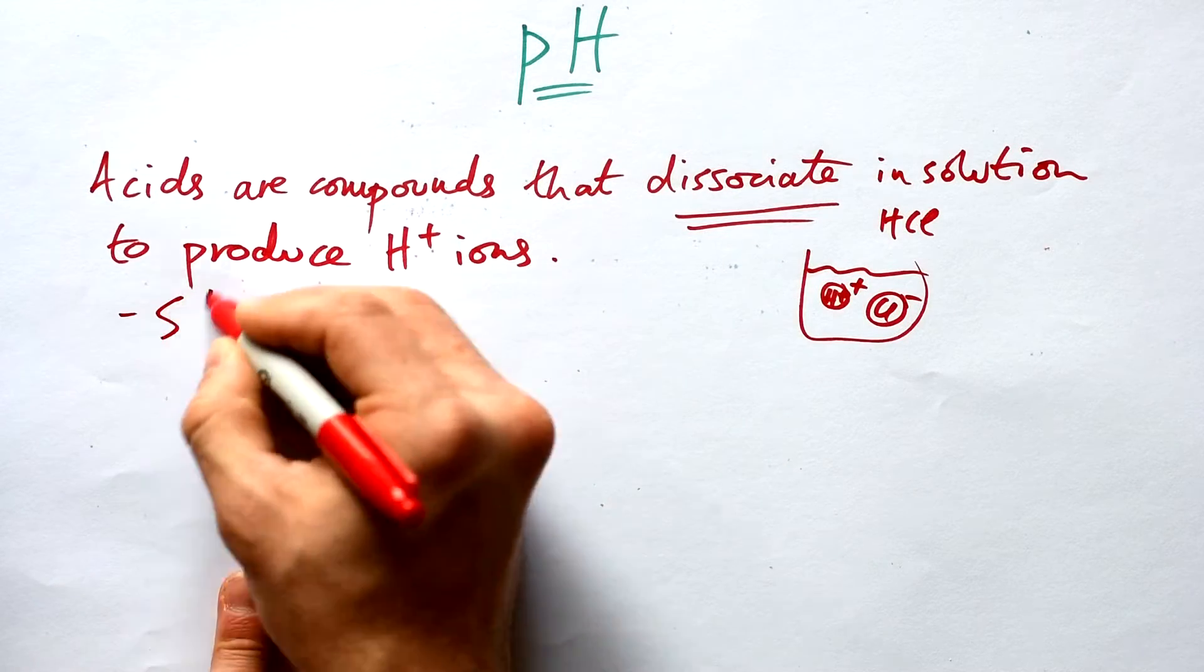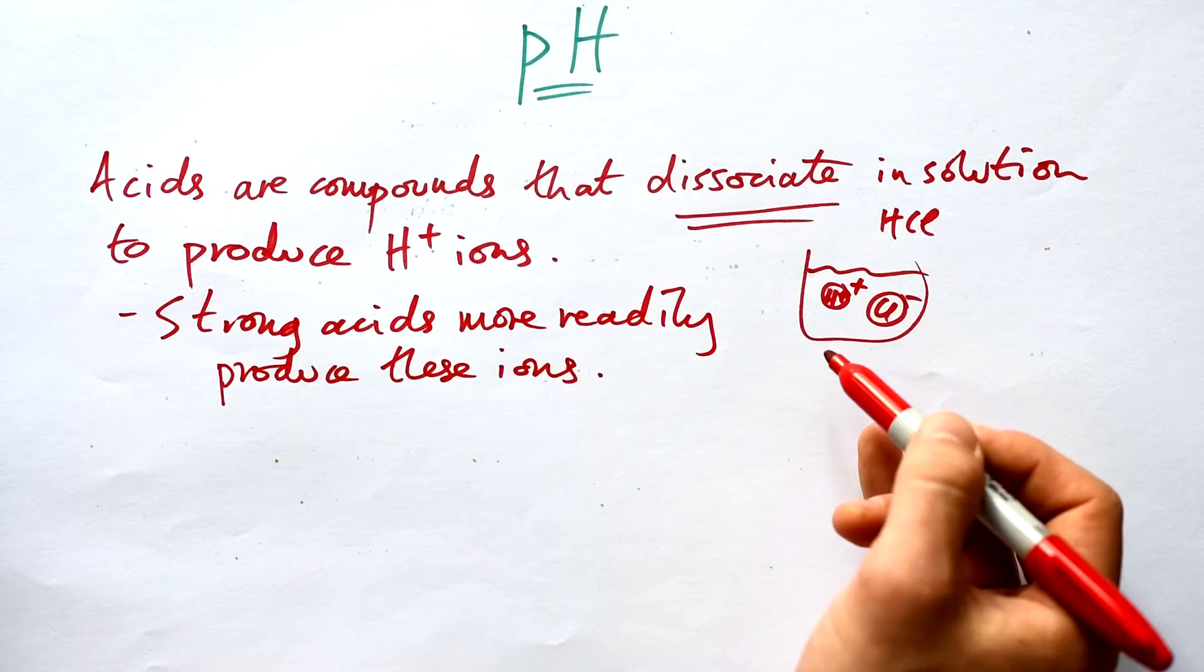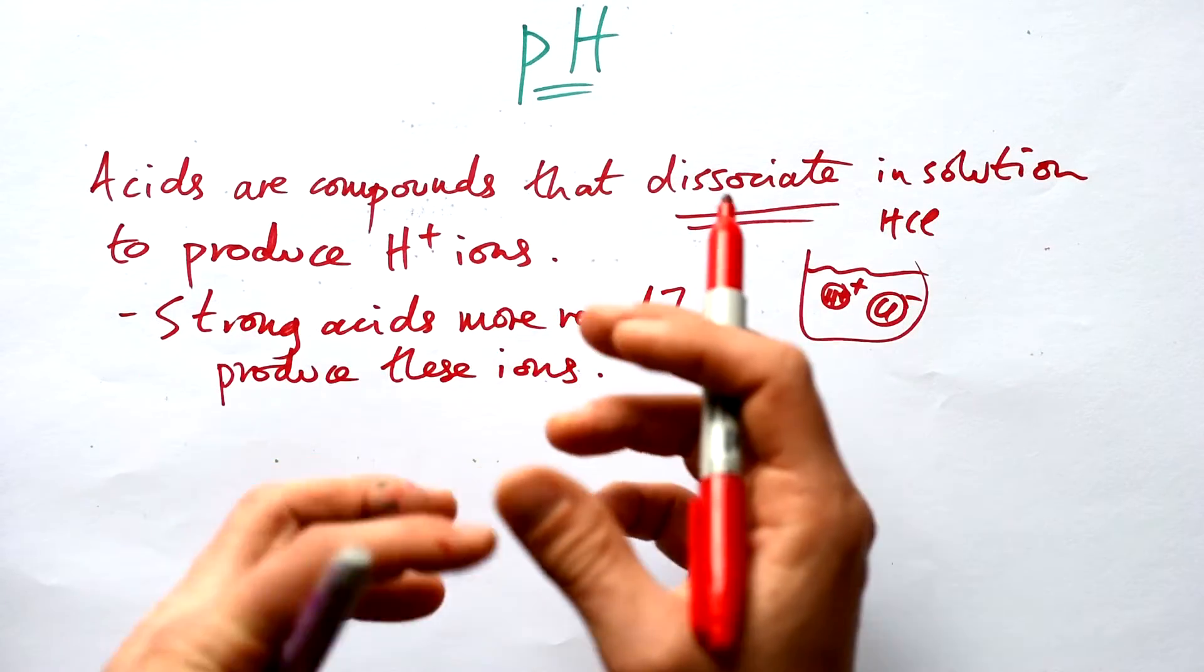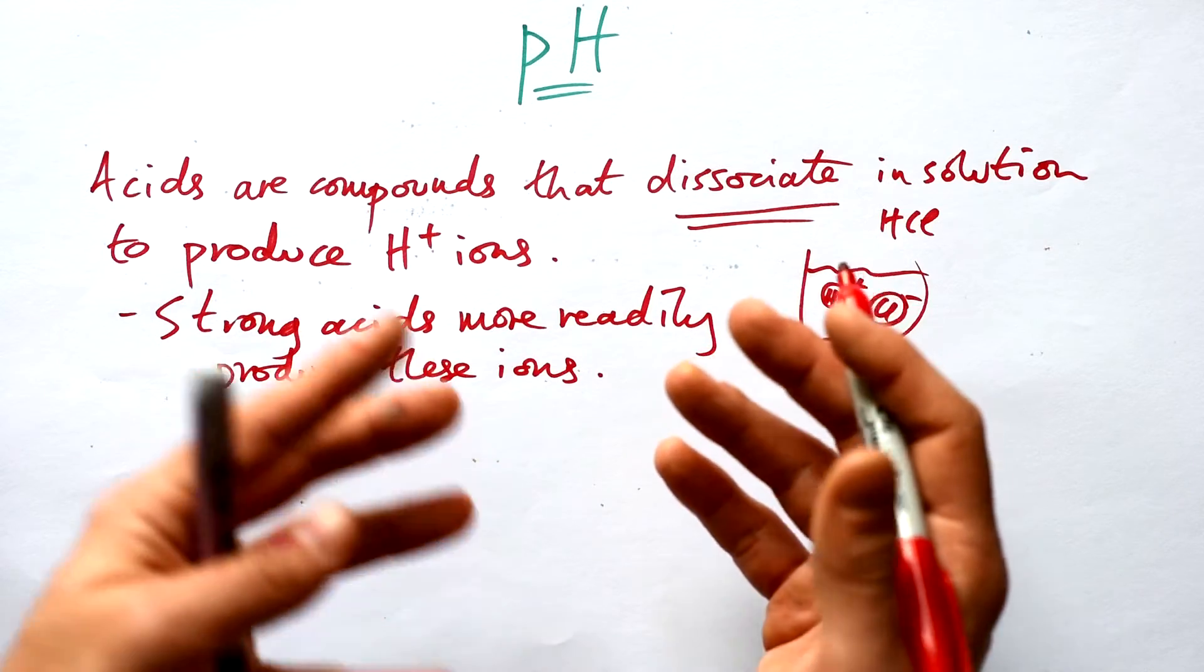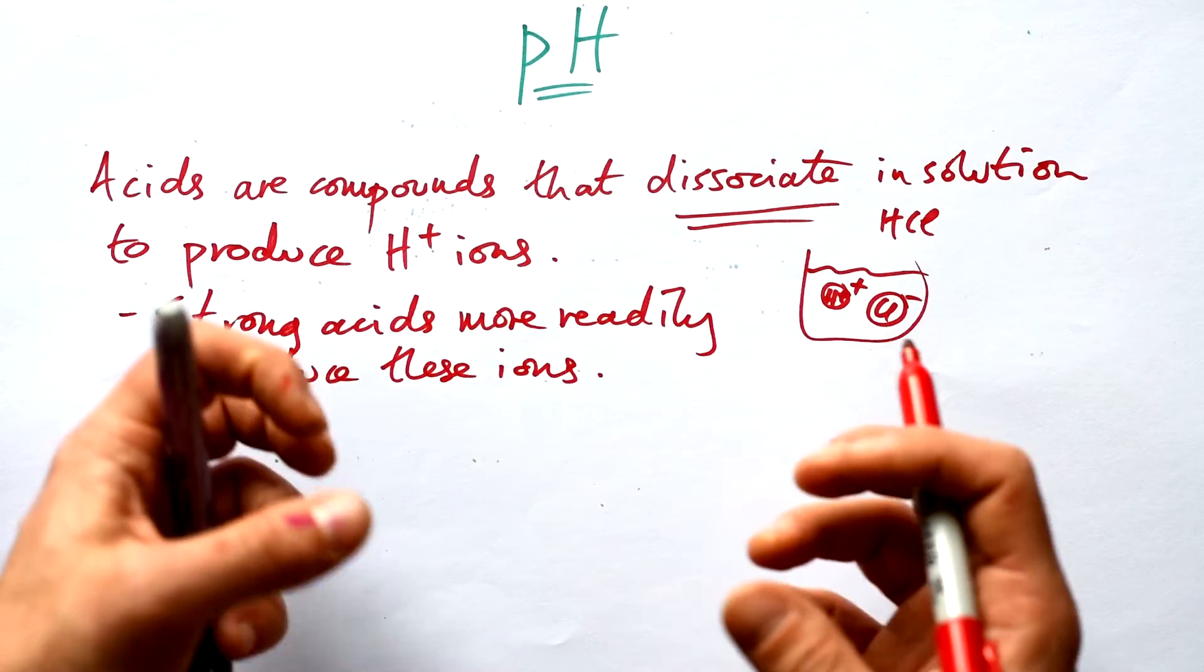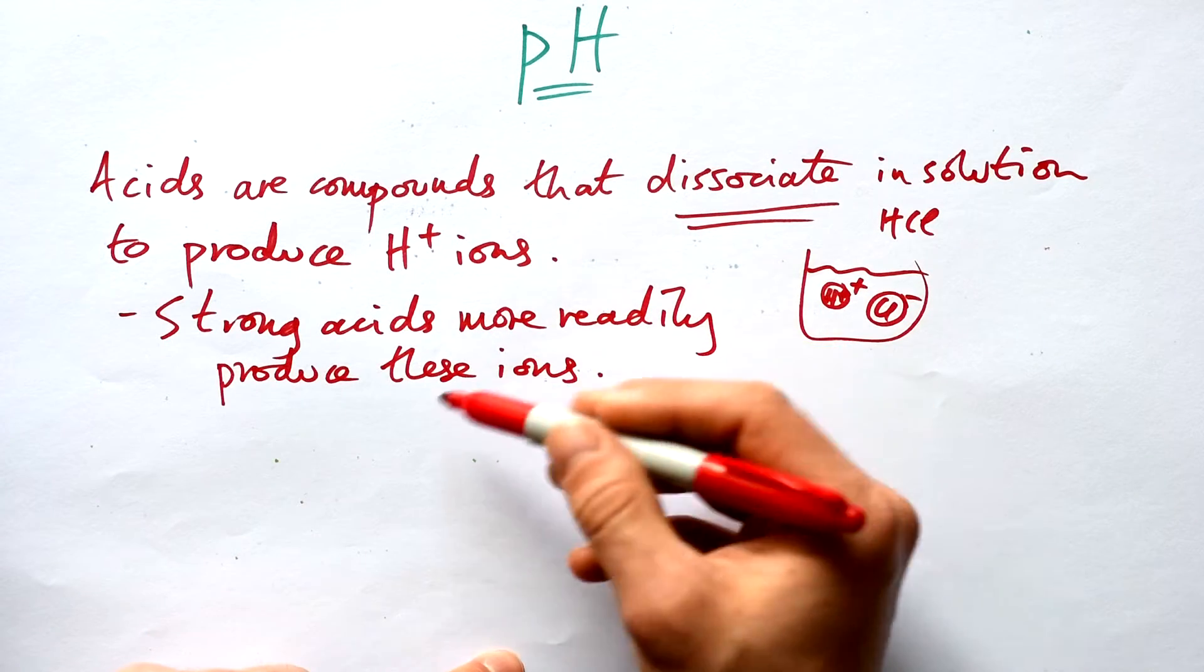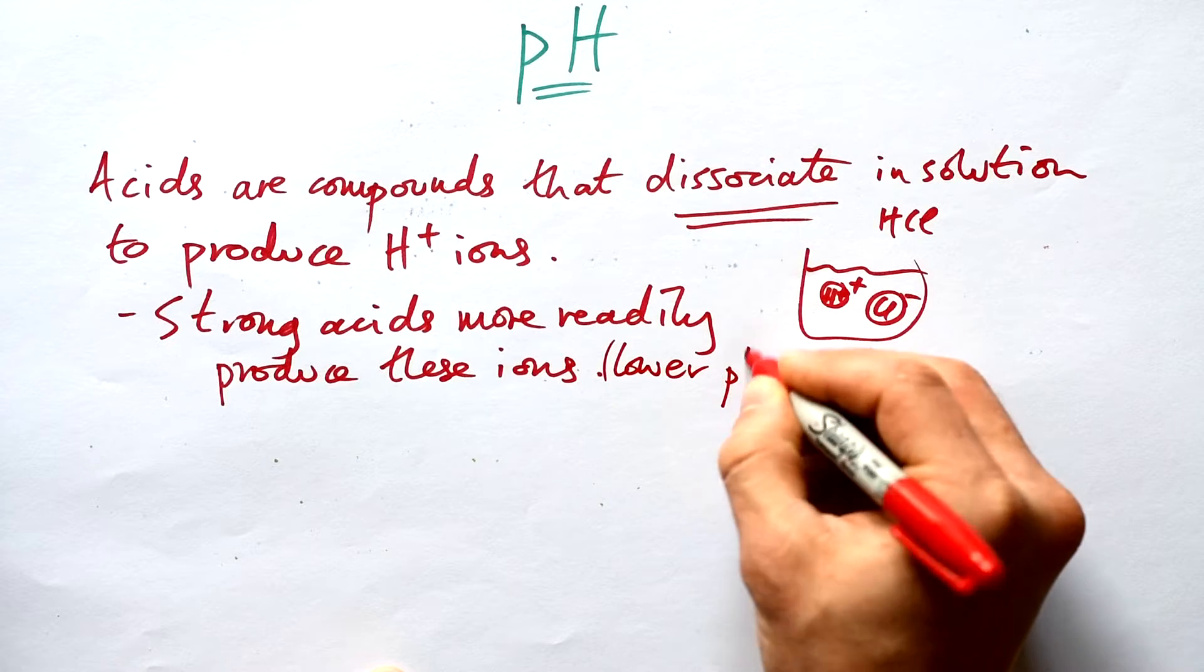What we can say is that strong acids more readily produce these ions. So hydrochloric acid, the H+ and everything else in it dissociate fairly readily—they do that easily. However, in ethanoic acid (vinegar), the H+ and the rest of the molecule they don't dissociate as easily. So if strong acids more readily produce these ions, that means that we have a lower pH.